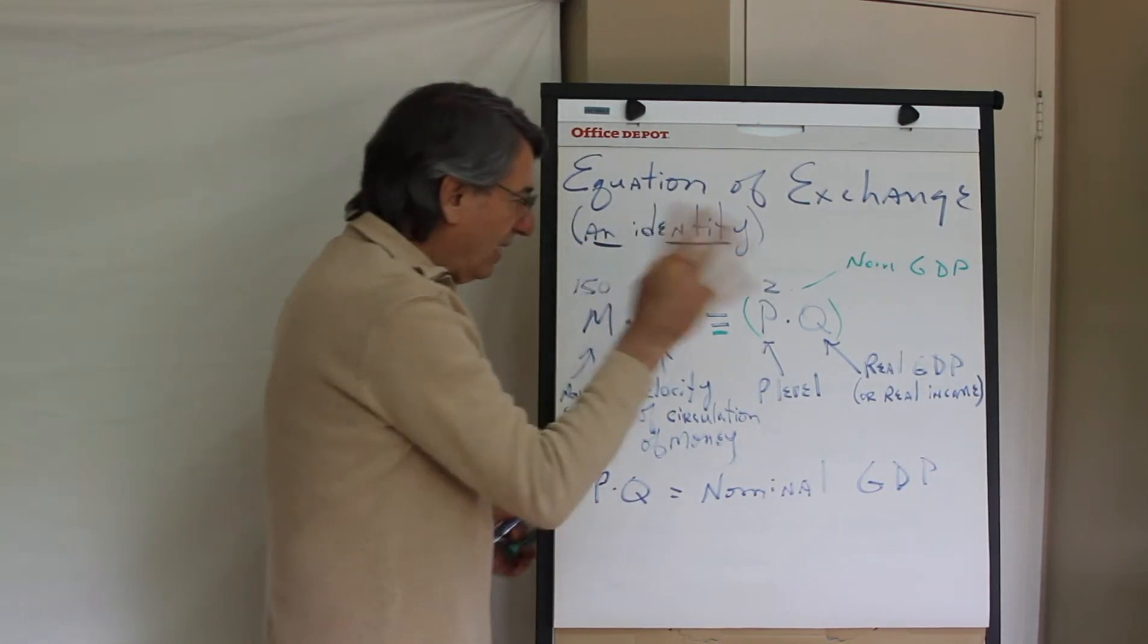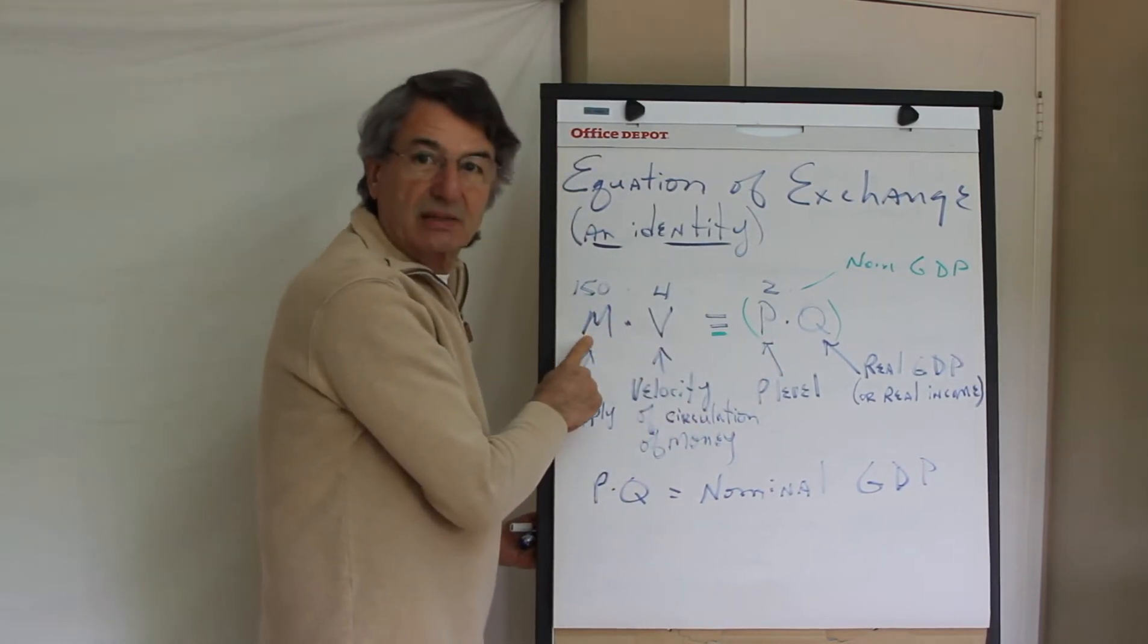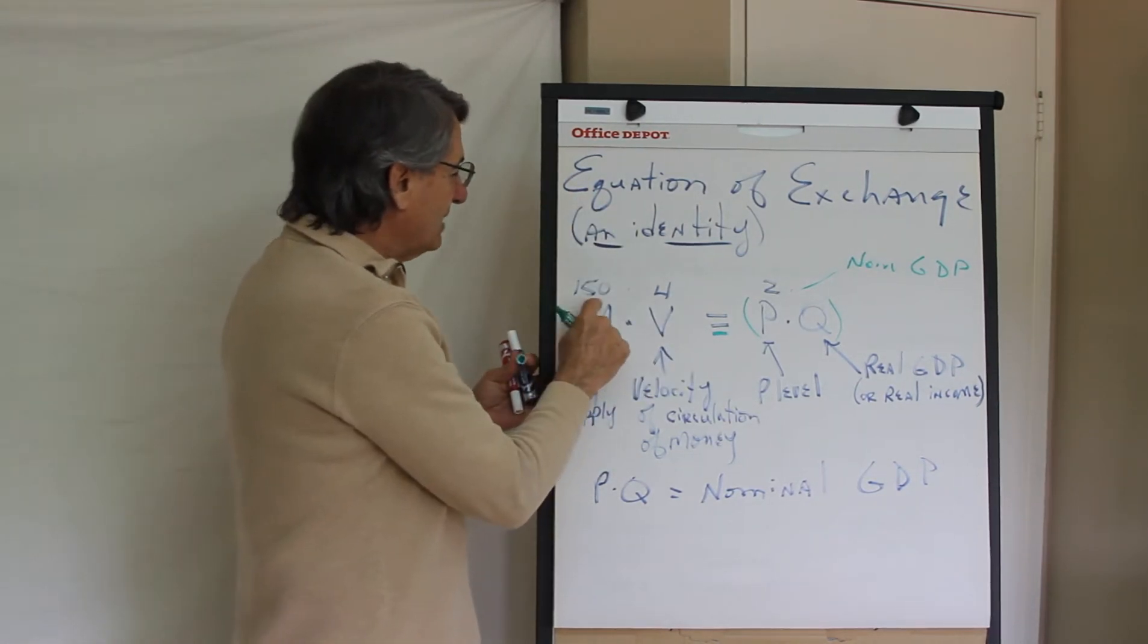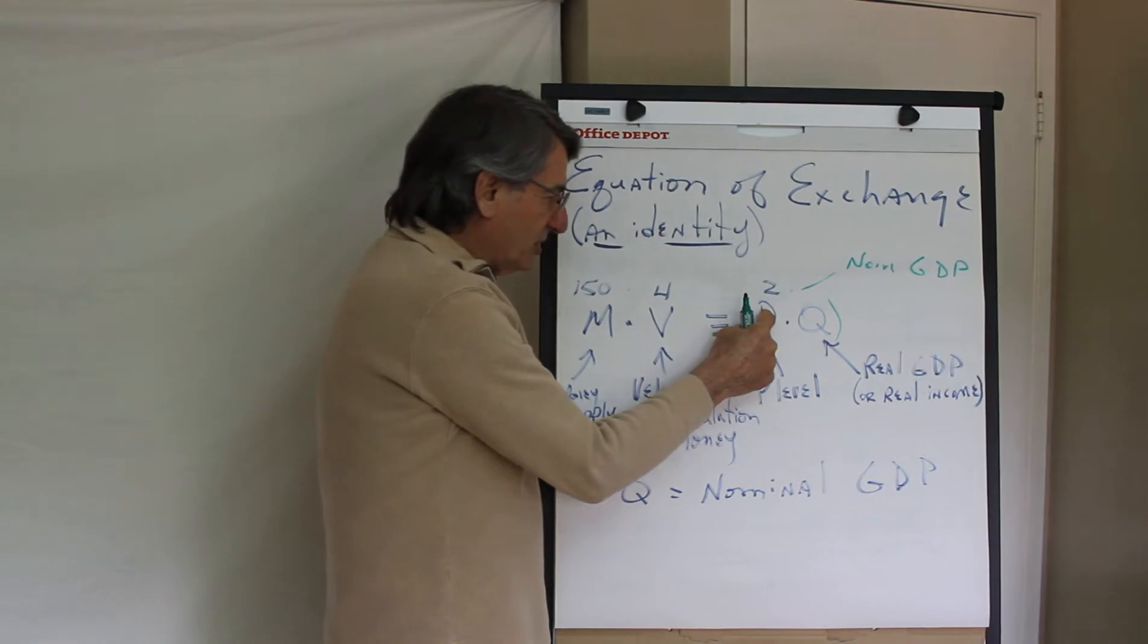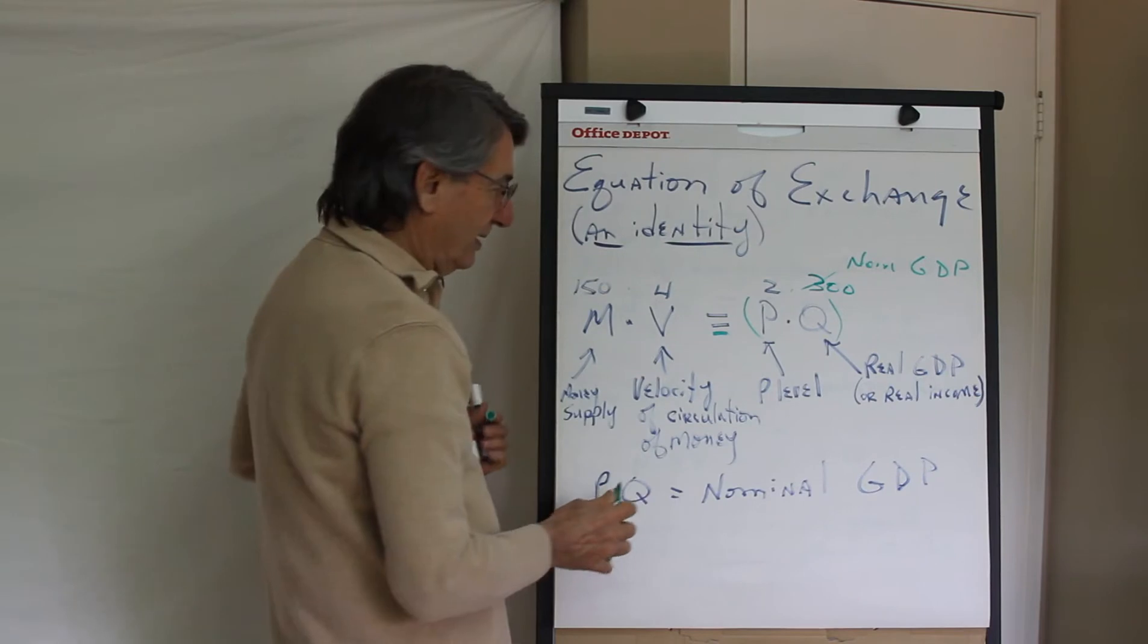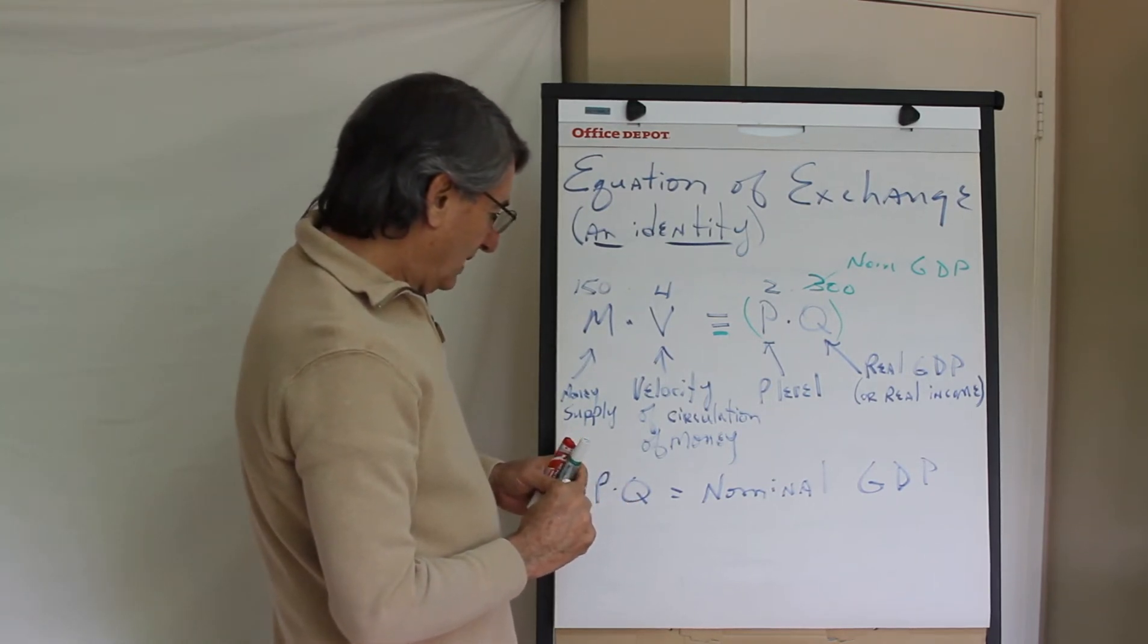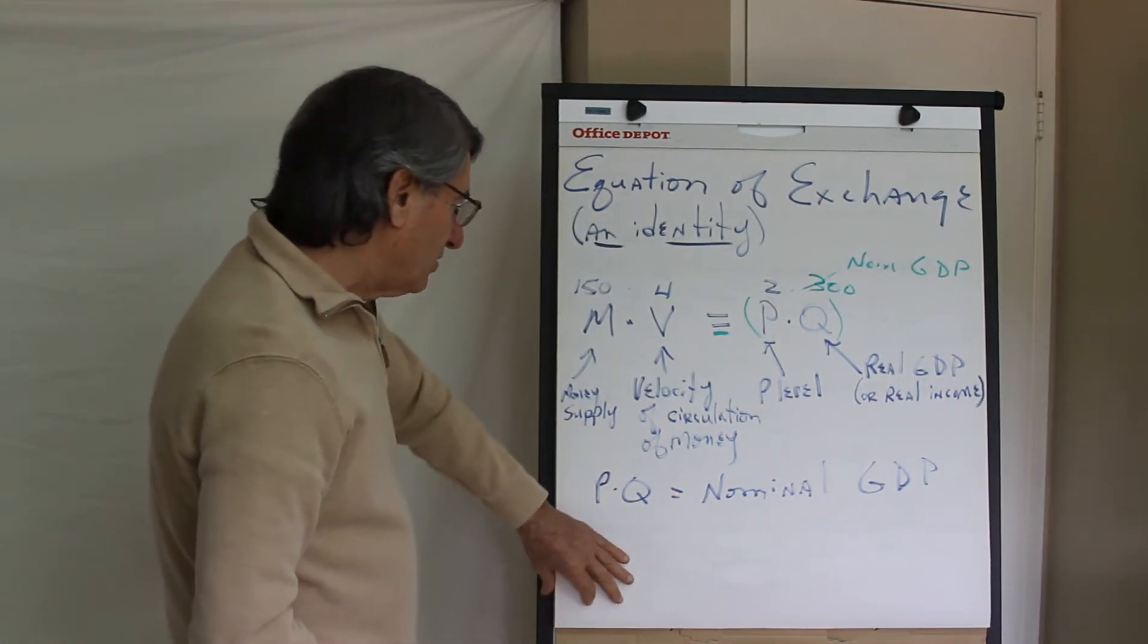Every year they publish what is real GDP, what is the price level, and the money supply. We have to define it as M1 or M2 or MZM. Let's say the money supply is 150 and velocity is 4, the price level that is published is 2. That means real GDP must be 300, because 150 times 4 must equal 2 times 300. It's true by definition, it's an identity. So that's the equation of exchange.